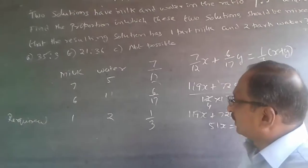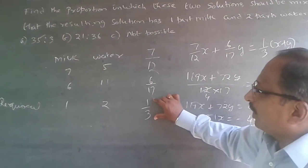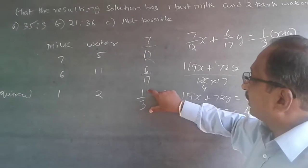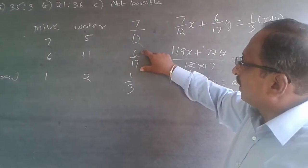The easier way of doing it is: see what I want is 1 by 3. The moment you see this, you get the answer. What I want is 1 by 3, what I have is 7 by 12 and 6 by 17.